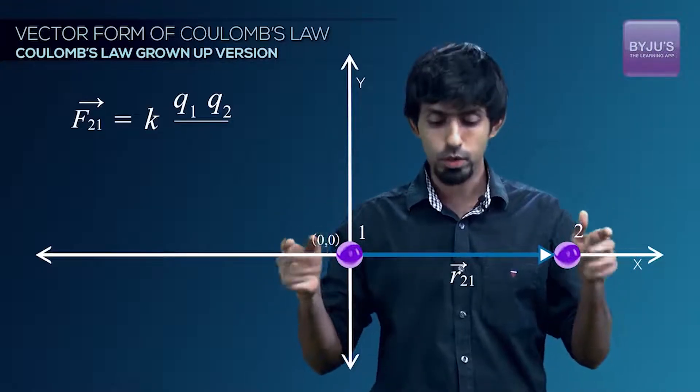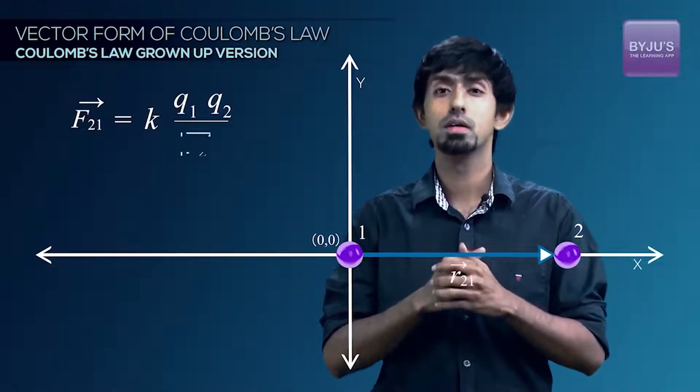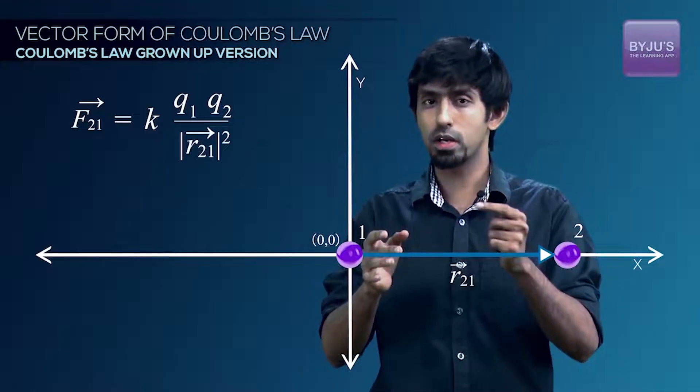What is that? It's the magnitude of this vector, R21 vector. So the magnitude of R21 vector squared will go there.